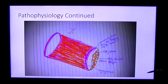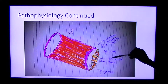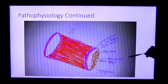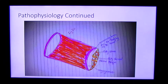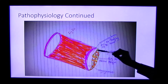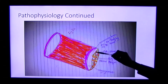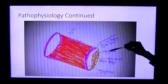Once the fatty streak is formed, it then attracts smooth muscles into the site, where they multiply and start to produce extracellular matrix comprising of collagen and proteoglycan. The extracellular matrix forms a large portion of the atherosclerotic plaque. The fatty streak turns into fibrous plaque.